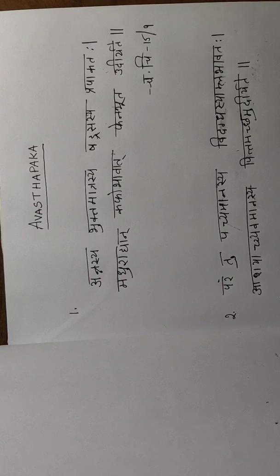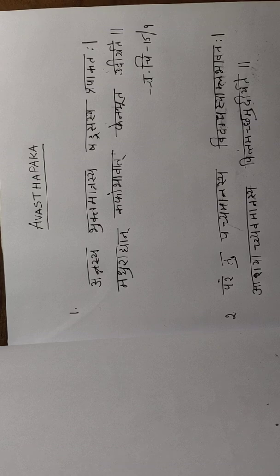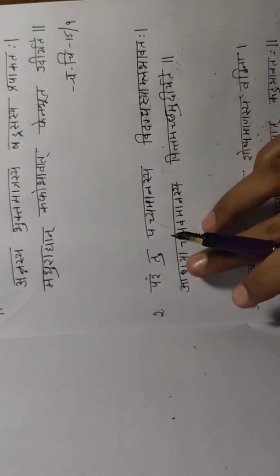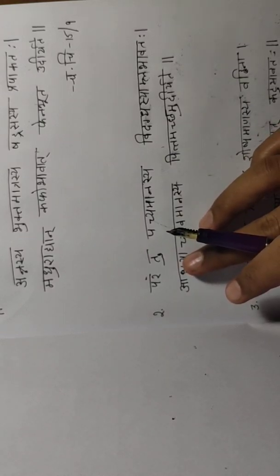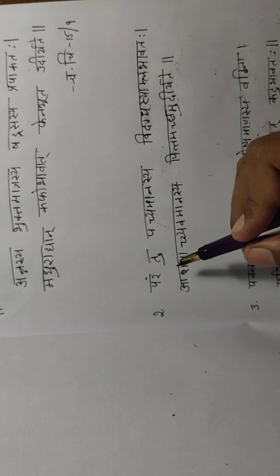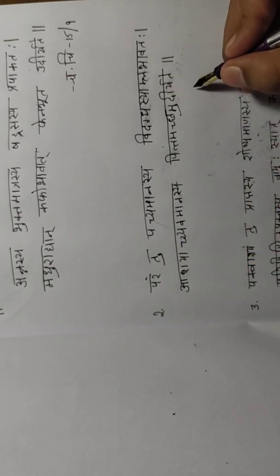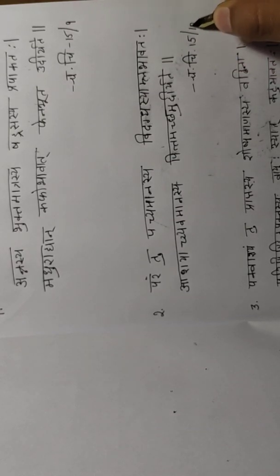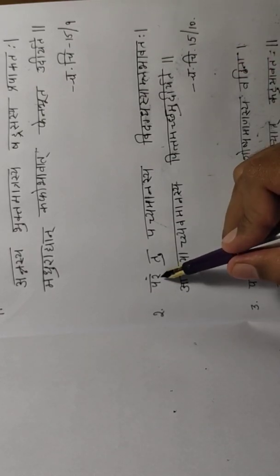The time period the food stays in Madhura Avastha Paka is 3 hours. Then, from Madhura Rasa, the food has to undergo the second stage of digestion, which is called Amla Avastha Paka or Vigdha Avastha Paka. This is quoted from Charaka Samhita, Chikitsa Sthana, 15th chapter, verse 10.